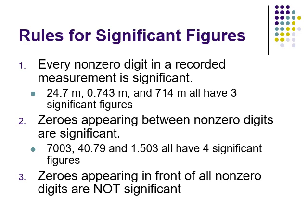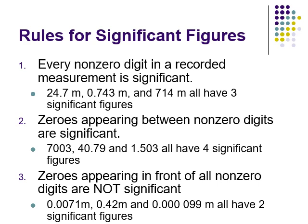Looking back at rule one: in 0.743, that zero in the front is not significant because it's not adding any accuracy. Zeros to the left of numbers are not significant. So for these numbers here, all of them would have two significant digits because they all have two nonzero numbers and then zeros to the left.